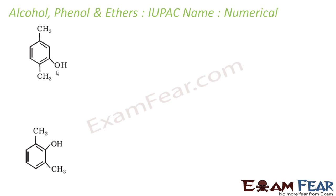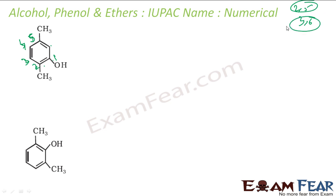Let's see this next one. This is a phenol. The OH is always position 1. Numbering one way gives substituents at positions 2 and 5, sum is 7. Numbering the other way gives positions 3 and 6, sum is 9. So 2 and 5 is better. It is 2,5-dimethylphenol.